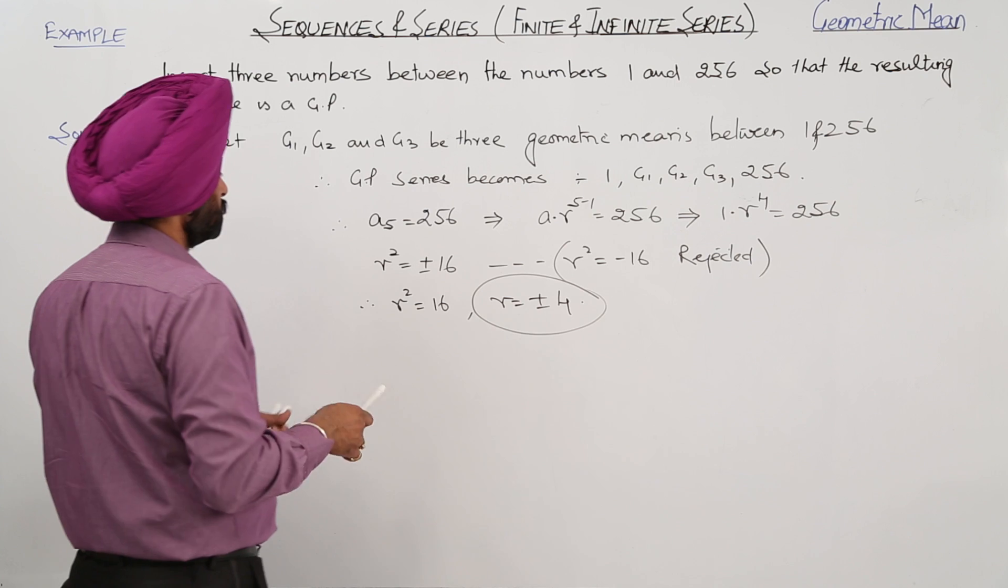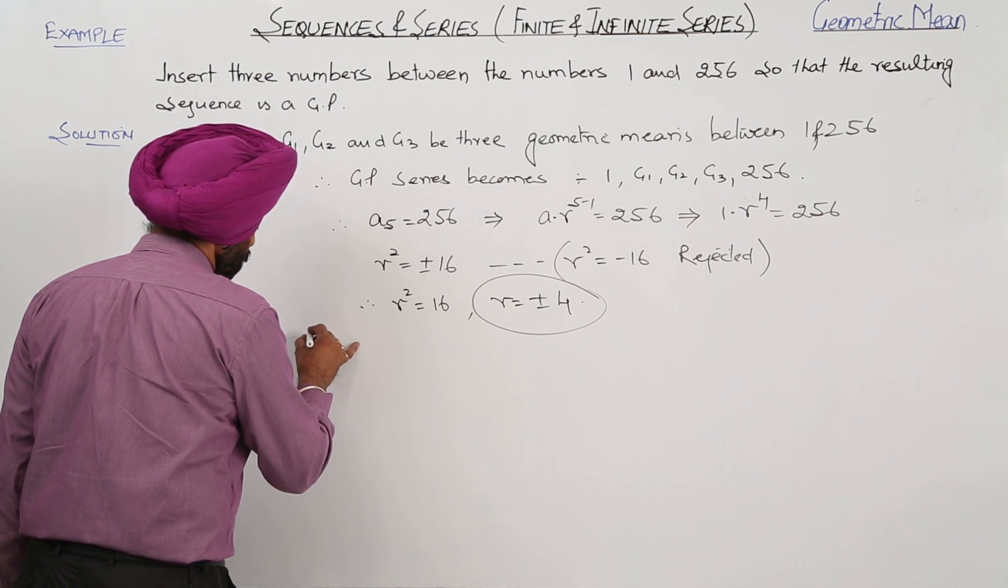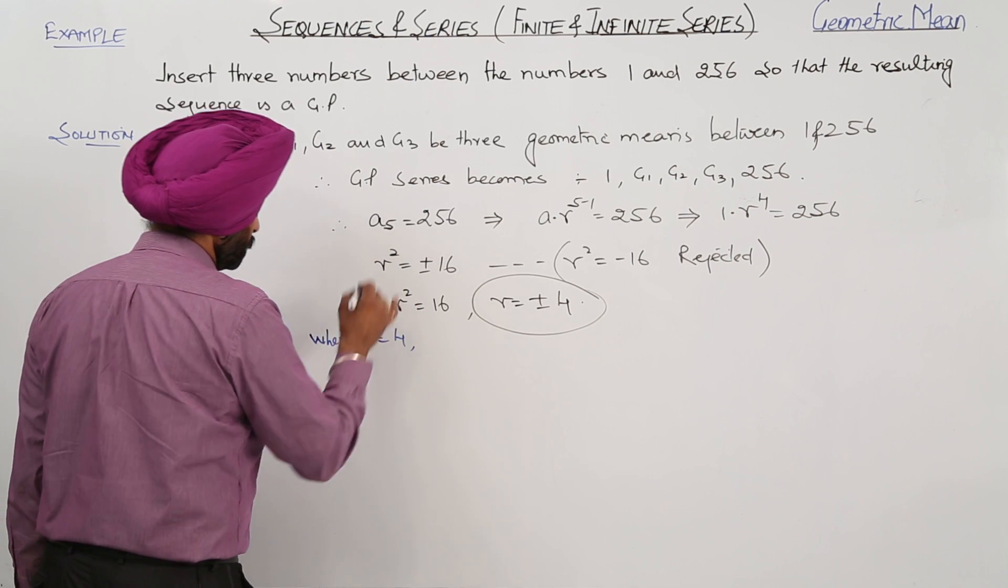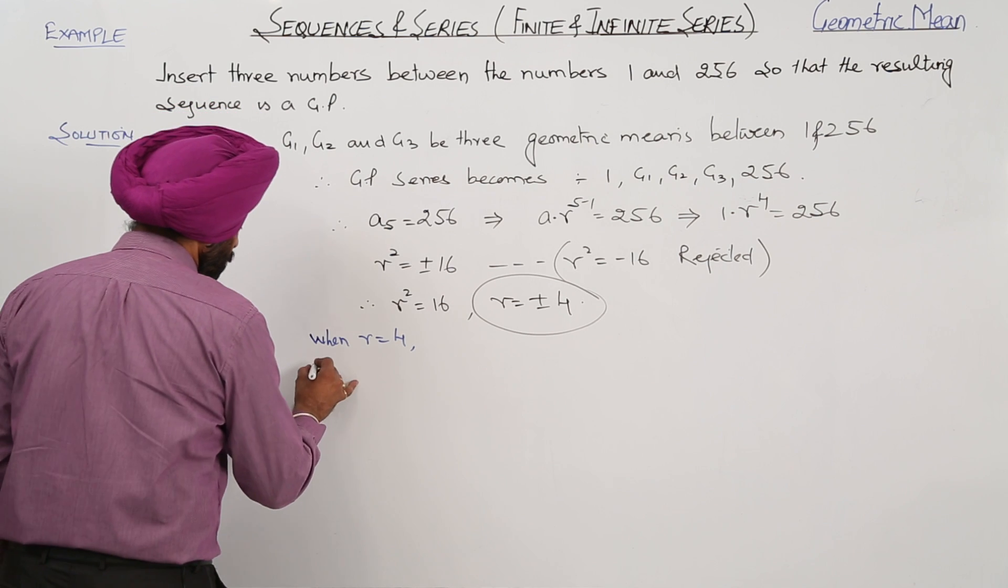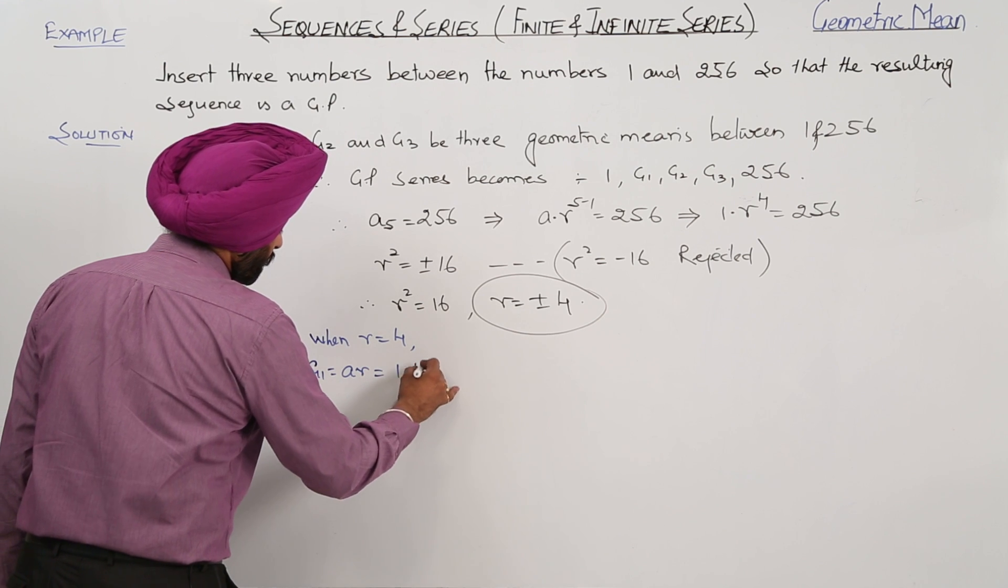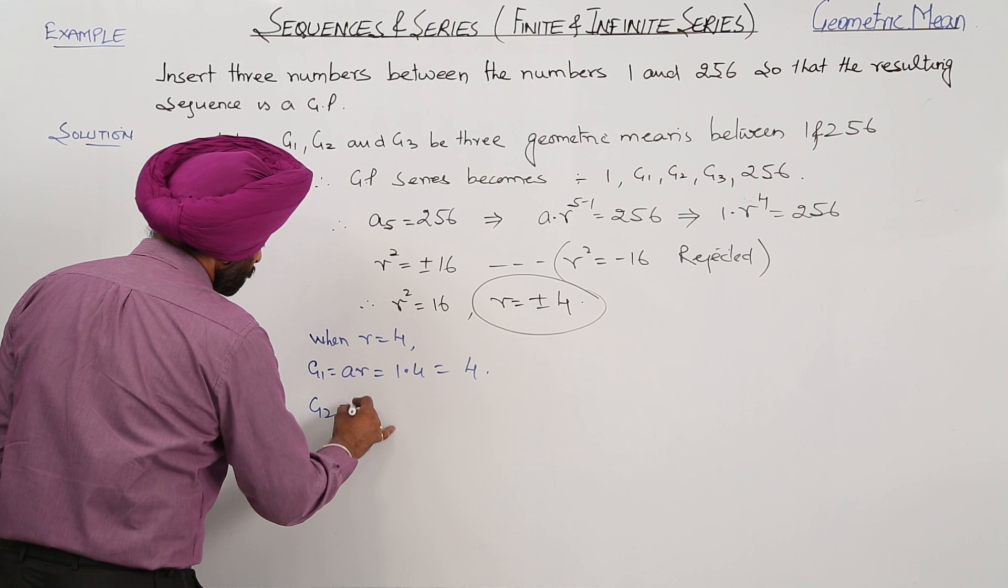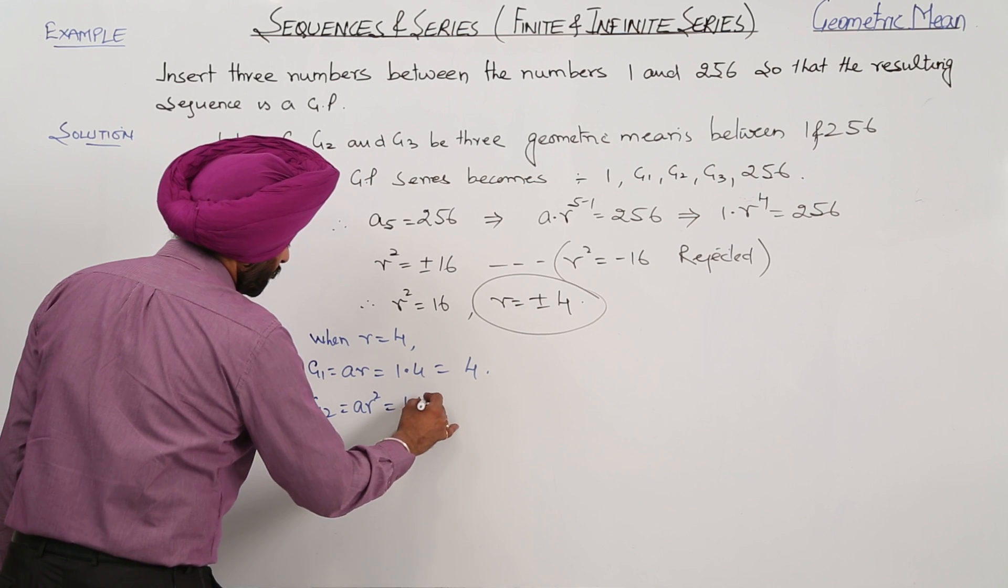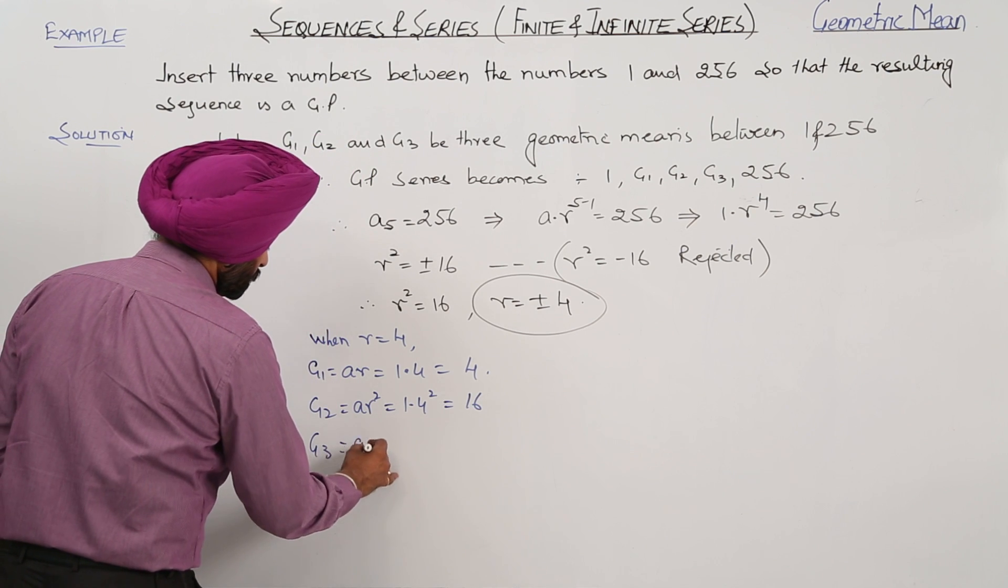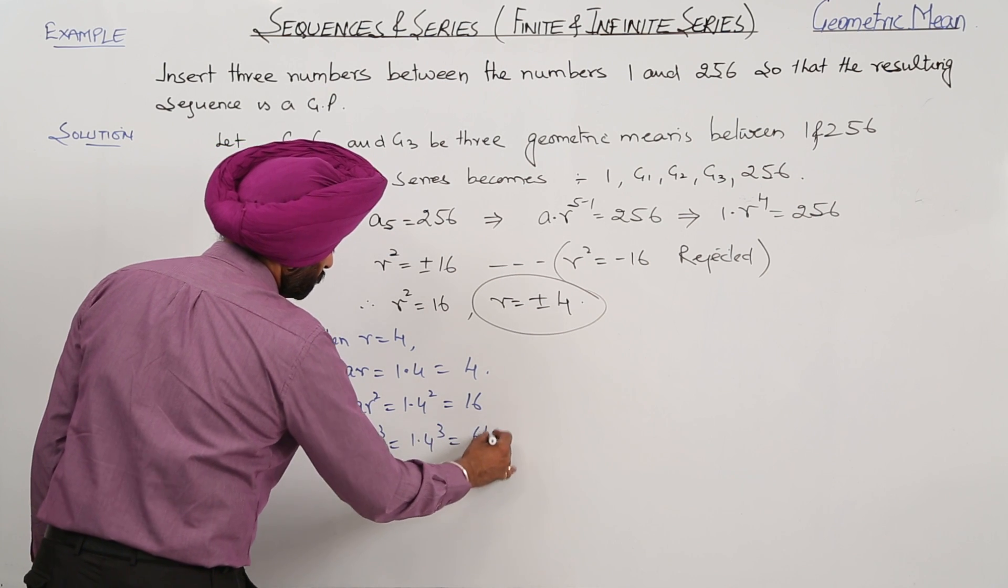Now we have to find the geometric means. When R is equal to 4, case 1: G1 is equal to AR, this is equal to 1 times 4 equals 4. G2 is equal to 1 times 4 square equals 16. G3 is equal to AR cube, this is 1 times 4 cube equals 64.